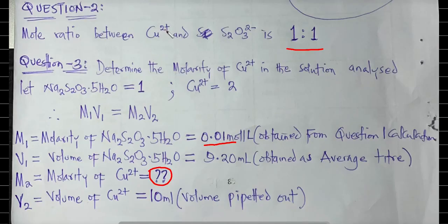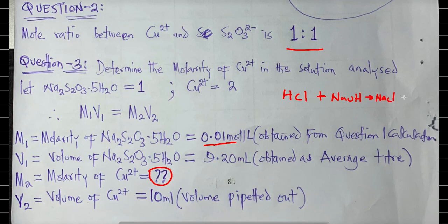Question two asks for the mole ratio. Recall for acid-base titration we use the formula: CₐVₐ / CᵦVᵦ = nₐ / nᵦ, where nₐ and nᵦ come from the balanced chemical equation. In this case you are asked for the mole ratio between copper(II) ion and thiosulfate ion. The answer is 1:1.